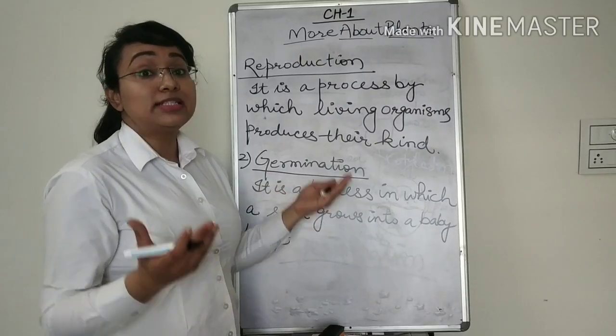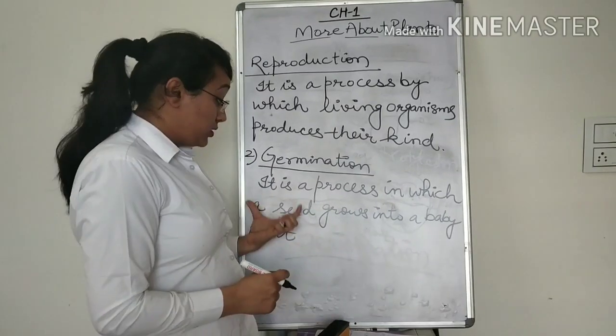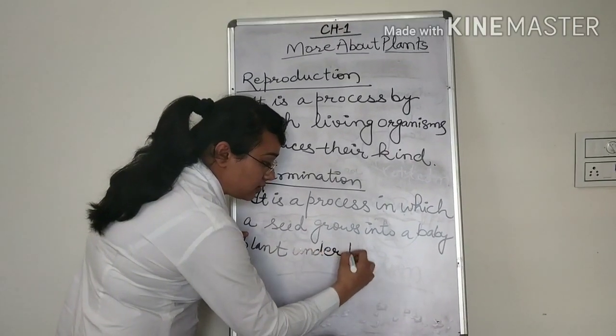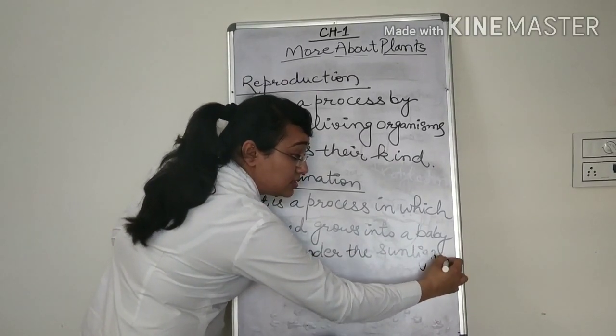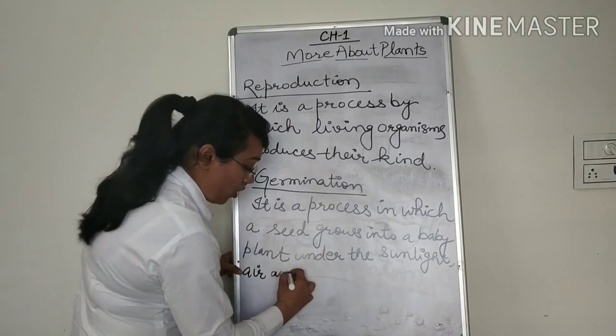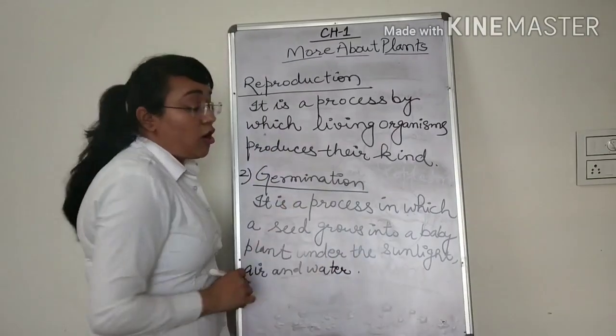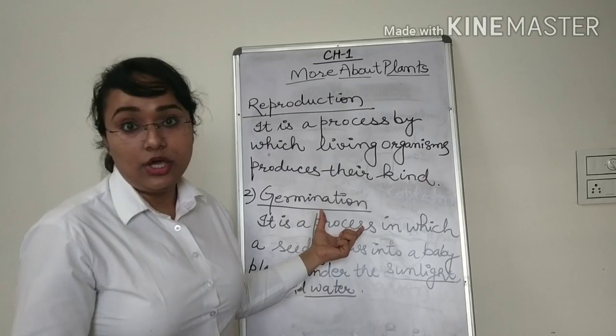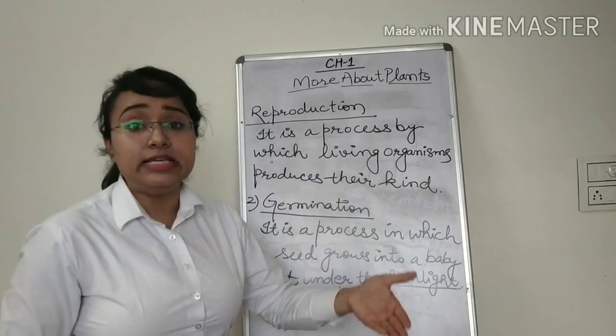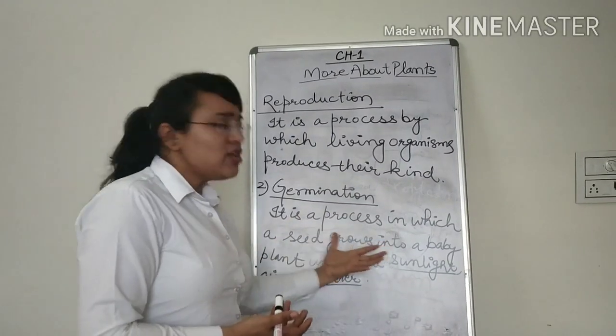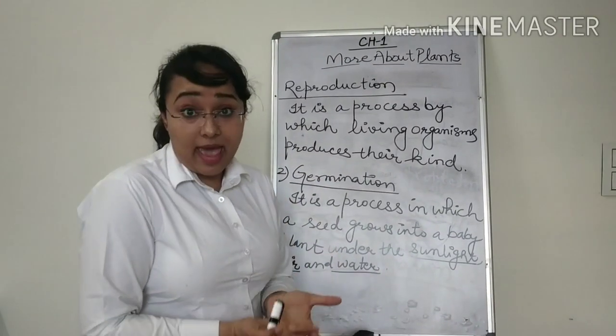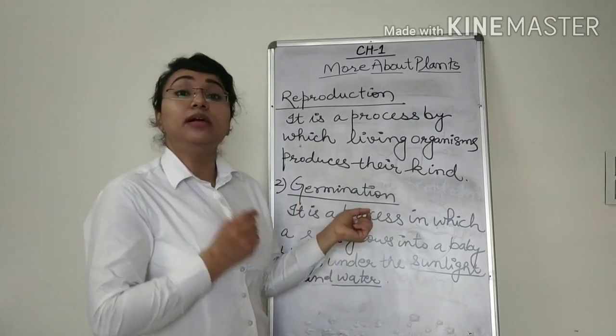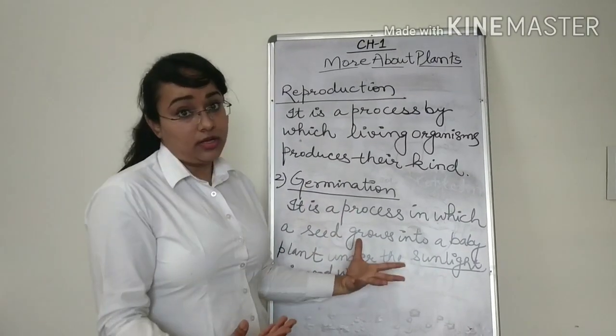Now I told you that a seed cannot grow without certain conditions. So a seed can only grow into a baby plant under the sunlight, which is very important, air and water. Now if any of these three conditions will not be there, reproduction or the germination of a seed cannot happen. So certain seeds grow into plants, germination happens. That is because favorable conditions are there like sunlight, air and water. So this is called germination.